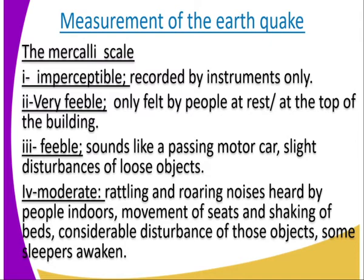Roman III is faint — it sounds like a passing motor car, with slight disturbances of objects. Roman IV is moderate — this is where we start having the rattling and roaring of noises heard by people indoors.